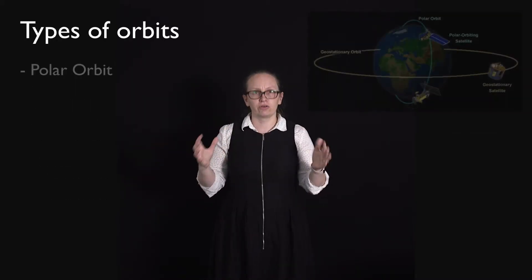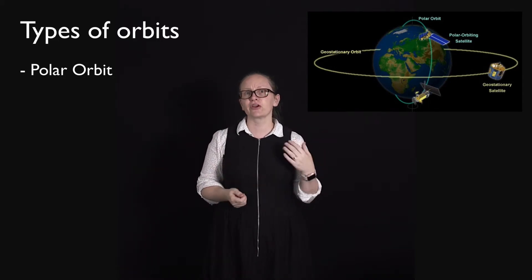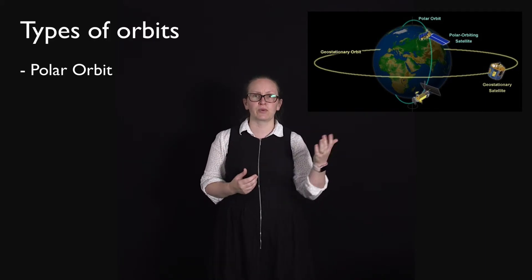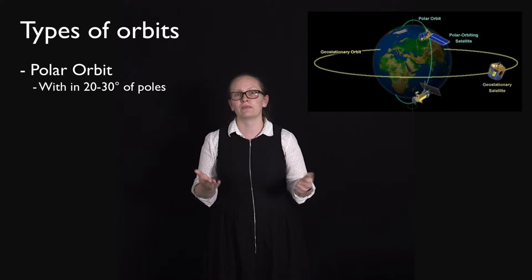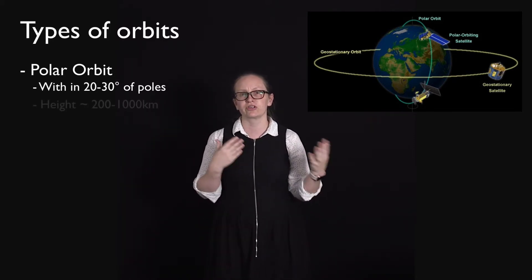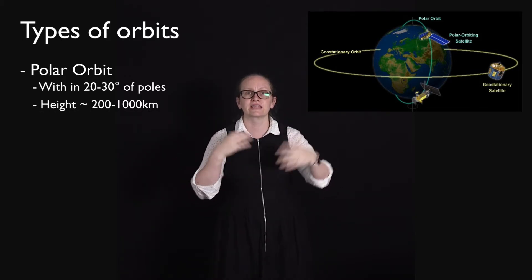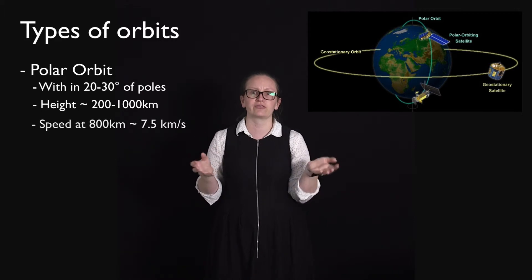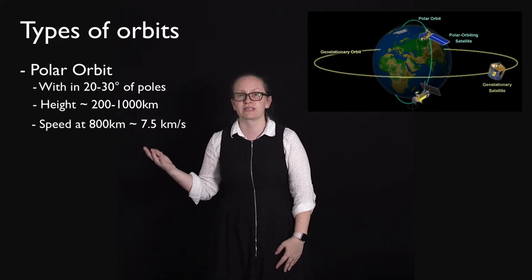We also have polar orbits. Polar orbits don't necessarily have to go directly over the north or south pole — anything which is within 20 to 30 degrees of the poles is known as a polar orbit. Polar orbits are typically at an altitude of 200 to a thousand kilometers. The exact speed is going to depend on the altitude, so if the altitude is 800 kilometers they'll have a speed of around about 7.5 kilometers per second.